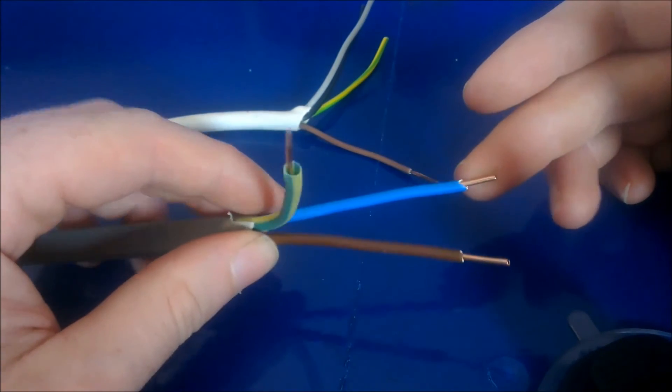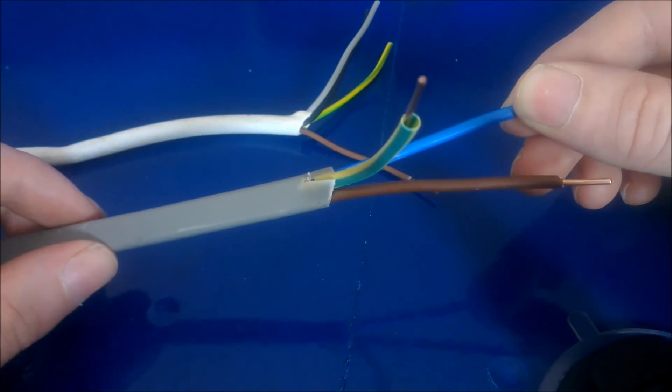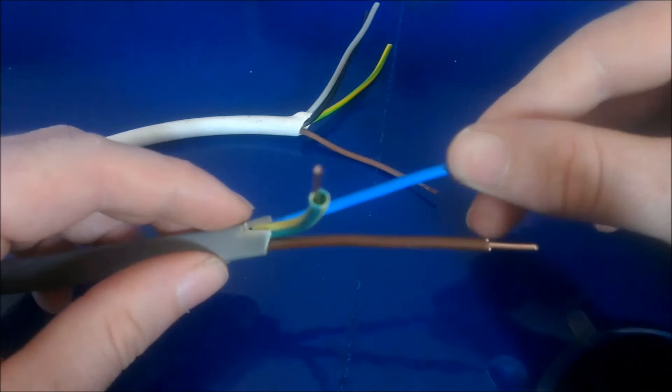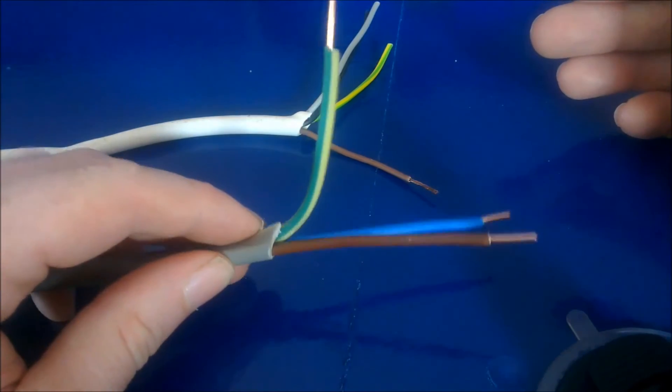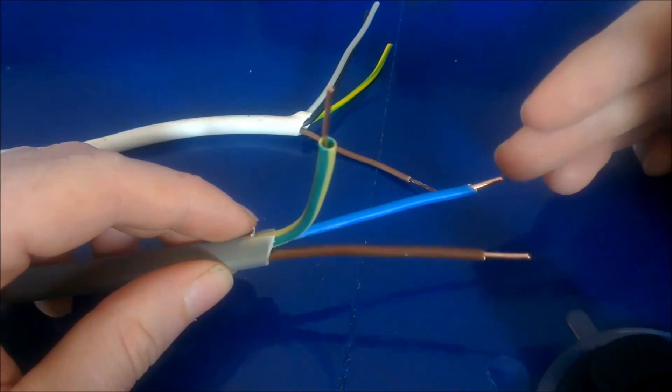But in comparison, in perfect conditions, a 2.5mm can carry up to I think it's 27 amps. So a 1.5mm cable can only carry up to 16 amps, so you can see the difference there.